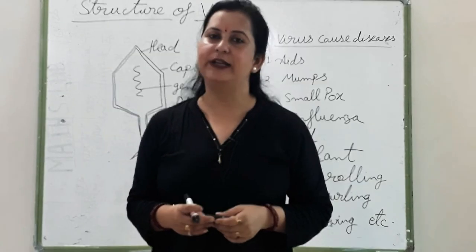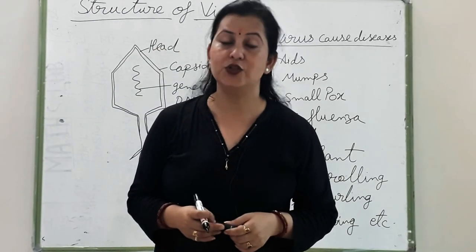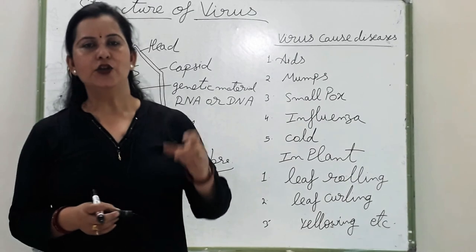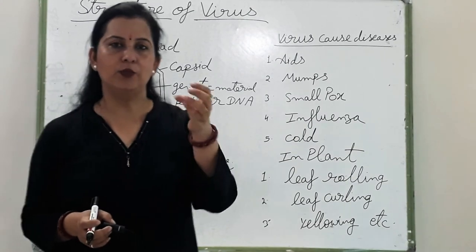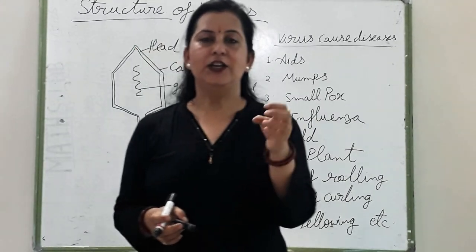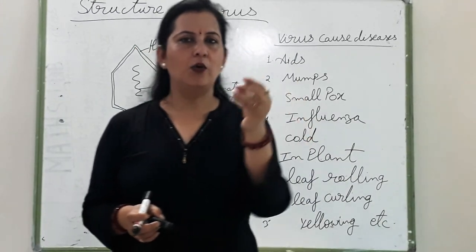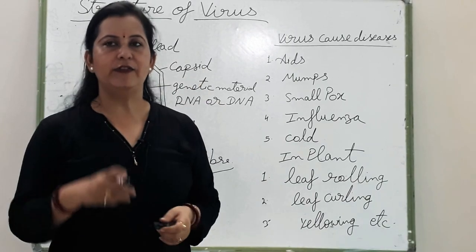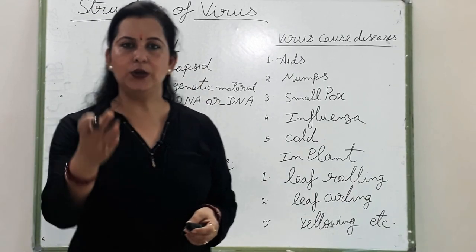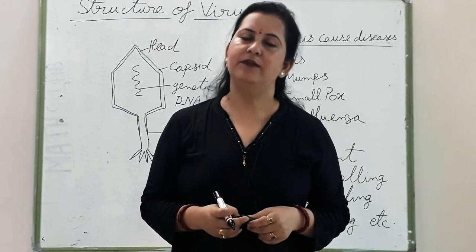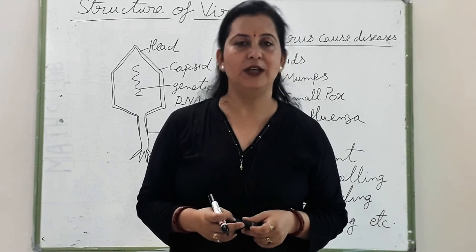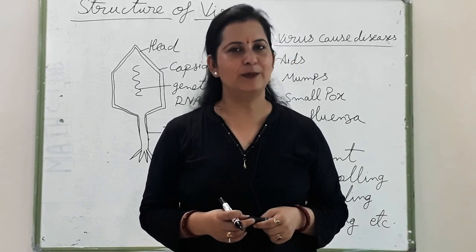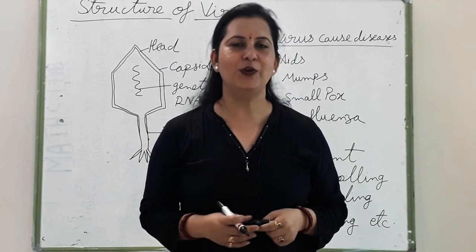These viruses also affect plants and leaves — leaf rolling, rolling round ho na, yellowing, yellow color ho jana, ya phil jana, toot karke gira jana — yeh sab kya hai? Virus ke karan hote hai — virus janit rog hai. I hope you have understood.